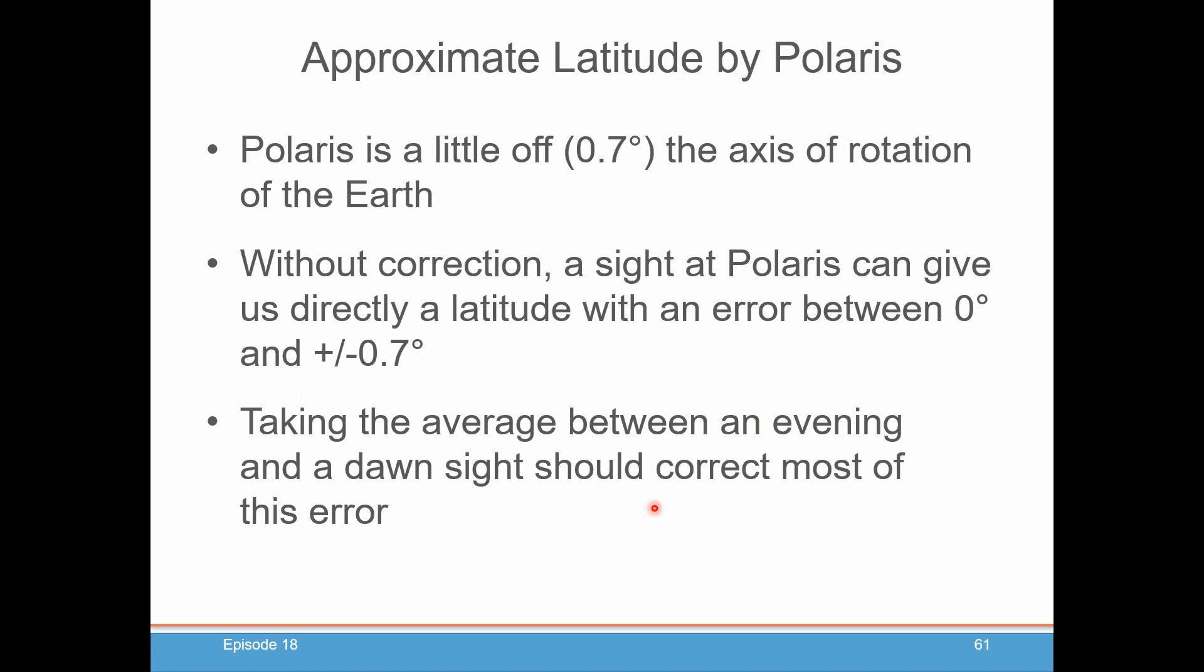Now, you need to do this during twilight because after twilight and it's too dark, you won't be able to see the horizon and take a good sight. Also, Polaris is not that bright. It's only a second magnitude star. So, you definitely want it to be dark enough to see Polaris, but light enough that you can still see the horizon. So, definitely twilight.